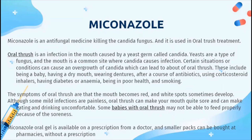Conditions that predispose to oral thrush include being a baby, having a dry mouth, wearing dentures, taking a course of antibiotics, using corticosteroid inhalers, having diabetes or anemia, being in poor health, and smoking. Symptoms of oral thrush include redness and wet spots in the mouth. Although some infections are painless, oral thrush can make the mouth quite sore and can make eating and drinking uncomfortable. Some babies with oral thrush may not be able to feed properly because of the soreness.